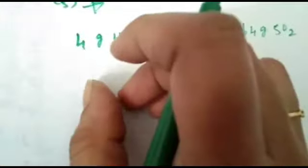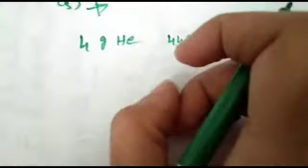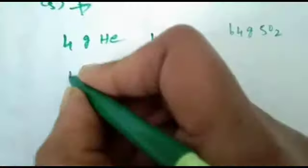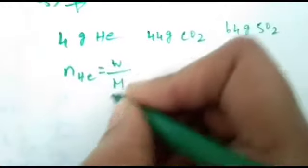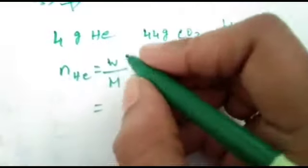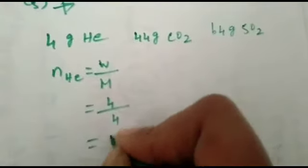First, in all calculations in the basic concept of chemistry, find out the molecular weight of helium, carbon dioxide, and sulfur dioxide. Number of moles of helium equals weight divided by molecular weight. Weight of helium is 4, molecular weight is also 4, so it's 1 mole.